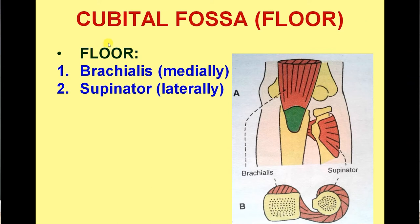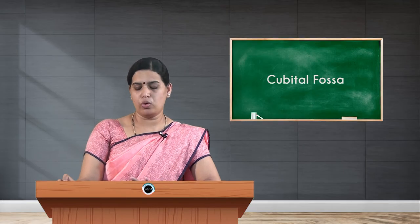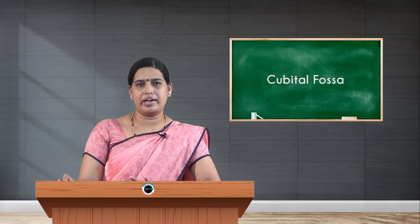The floor is formed by two muscles. In the upper part, it is the lower portion of brachialis as it approaches its insertion to the coronoid process of the ulna. In the lower part laterally, you find the supinator muscle. So brachialis above and supinator below together form the floor of the cubital fossa.